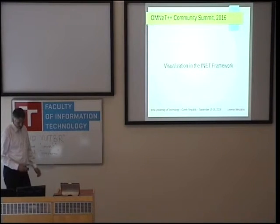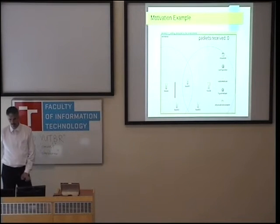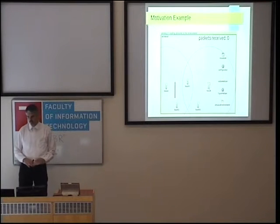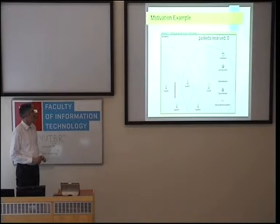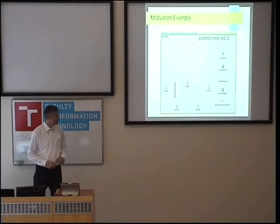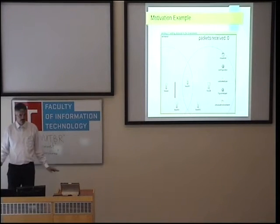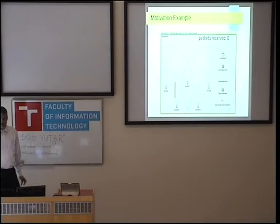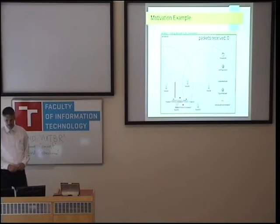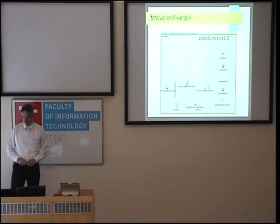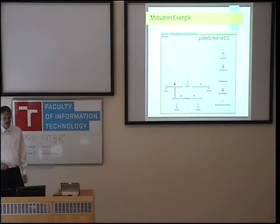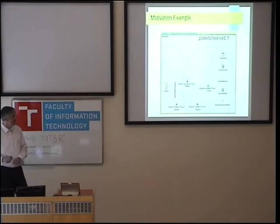First things first, this is a simple motivation example. It's part of the INET wireless tutorial, step 11. It's a very simple network where host A is sending packets to host B through three routers R1, R2, and R3. If I start the video, you will see the default animation. The question is: can you tell which path the packets take from A to B just by looking at the animation? There are only two packets in this animation.